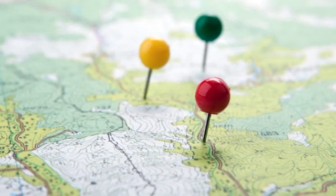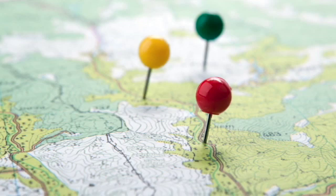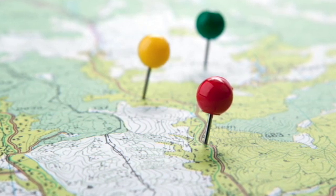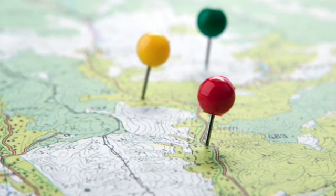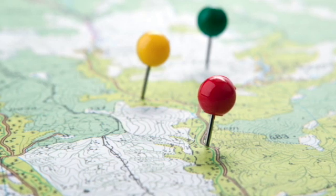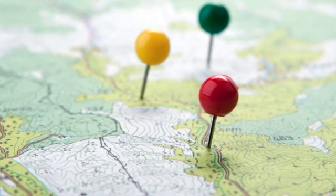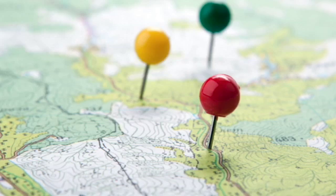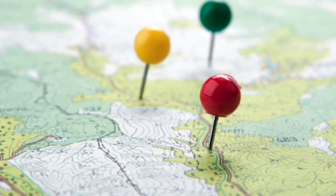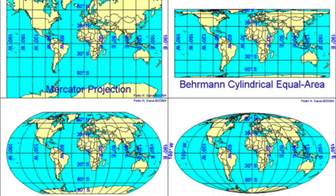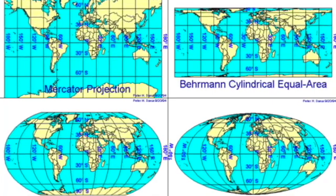Maps are not round like globes. Instead, they are flat representations of a round world. Because of this, maps distort what Earth looks like. Distort means bend or twist. In other words, maps will always show physical features of Earth incorrectly to some degree. Even though maps aren't as accurate as globes, they have several advantages.